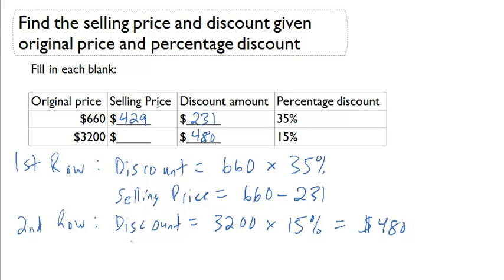If I now subtract I can get my selling price which is going to be $3200 minus my discount amount of $480. And that's going to give me $2720.